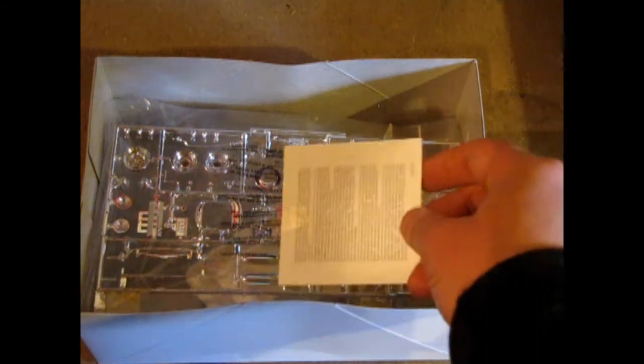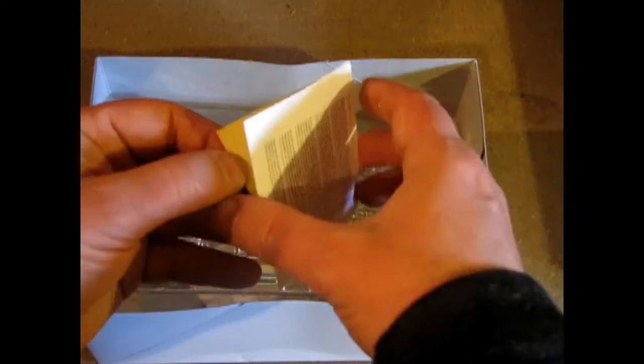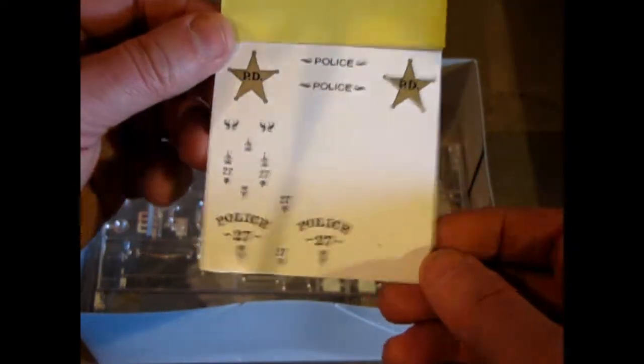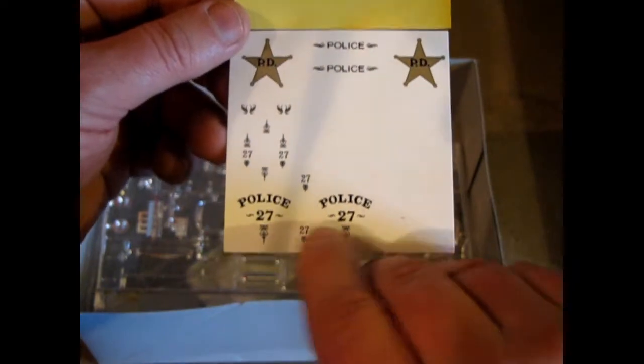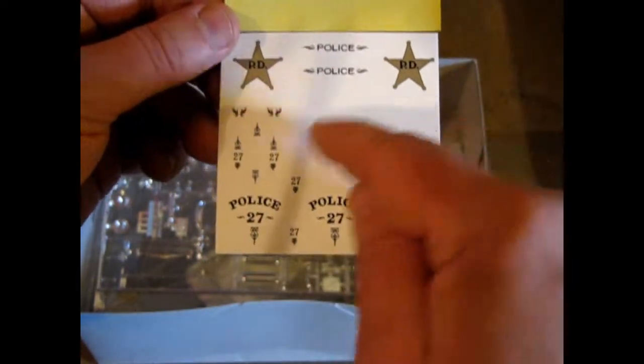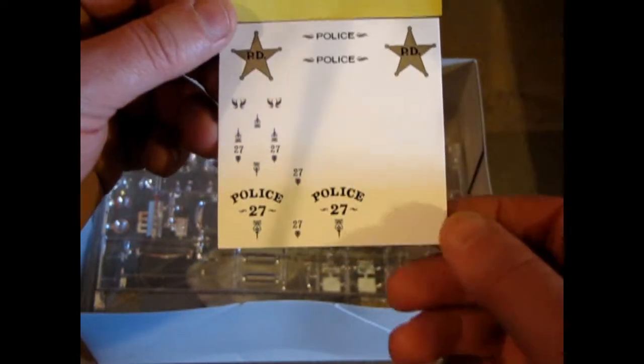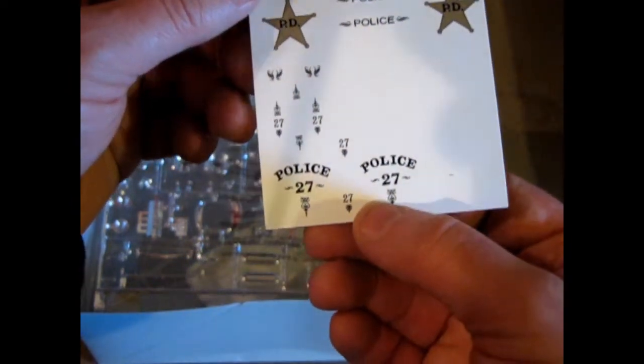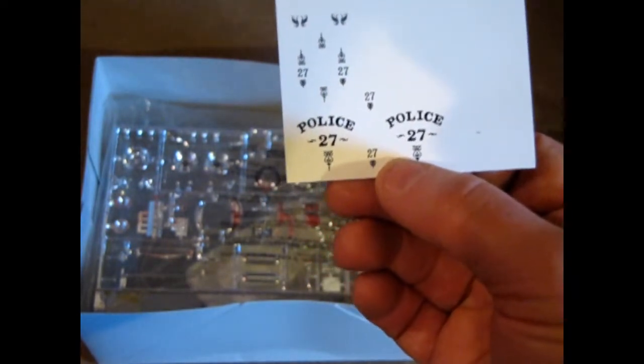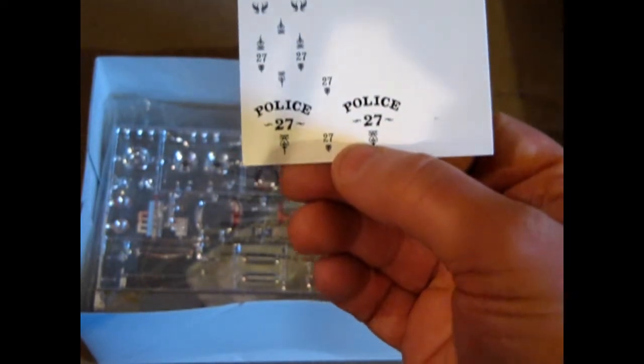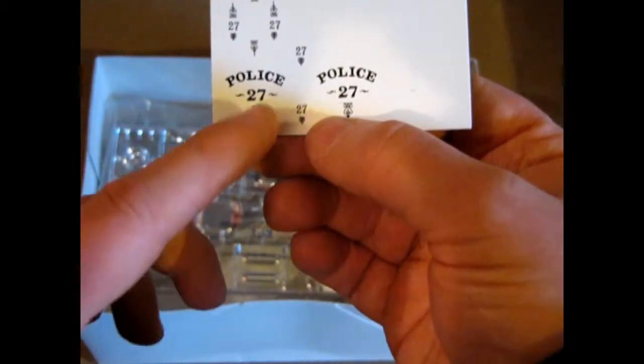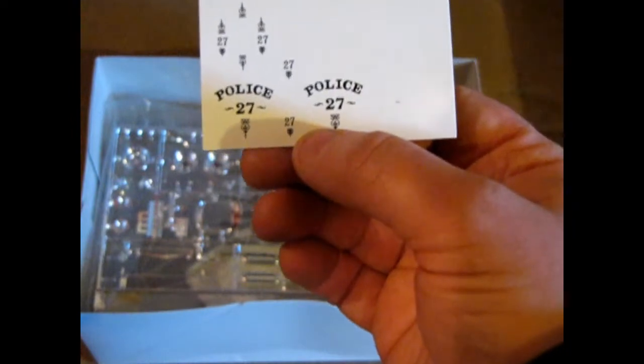Now, what's interesting about this kit. They give you these nice police decals. They just say police and 27. And then there's white ones here too. And the star. The thing that's kind of good and bad about this, AMT tends to, if the car's in 1950s, they'll put 50 in there. If it's from 1927, they'll put 27 in there. If it was from 25, they'll put 25 in there. That's how they do it.